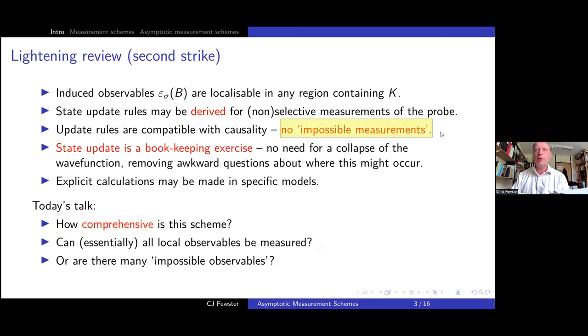It's also important to say that the state update appears as a bookkeeping exercise. We don't talk about collapse of the wave function, or at least we don't need to, and this is useful because it removes some very awkward questions about where state reduction might actually occur. Most important is that one can calculate explicitly using this framework, at least in specific models. What I want to talk about today is how comprehensive is this scheme. Can you actually measure all or essentially all local observables using this framework? If so, then we've really got rid of the impossible measurement problem. But it could be that there may be observables that are decent ones in the theory that can't be measured in this way, in which case maybe there are some impossible observables left after all.